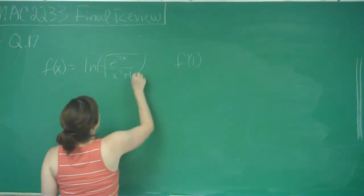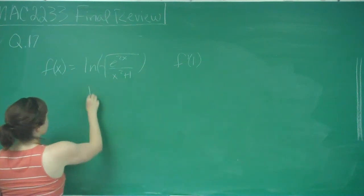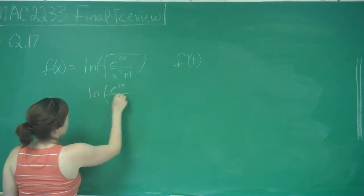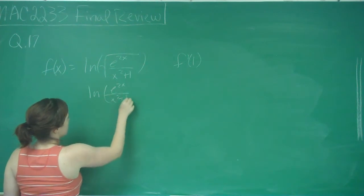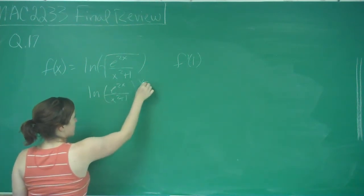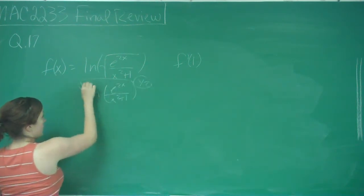So, I'm going to rewrite this as the ln of e to the 2x over x squared plus 1, all to the 1 half power. Then I'm going to bring that 1 half power to the front.